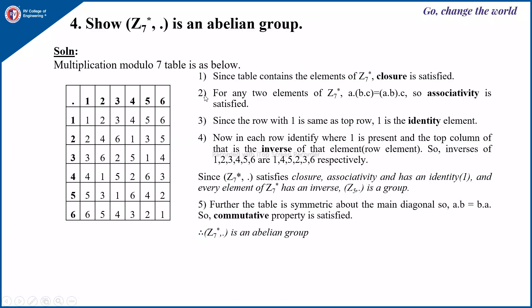To prove that it is an abelian group, we have to show each of the properties. First, for closure: since we have the table format, we can observe that the table entries contain only the elements of Z7 star. Therefore, closure is satisfied.